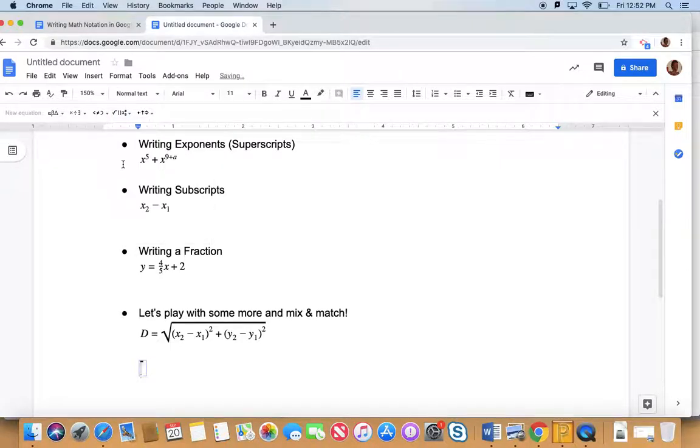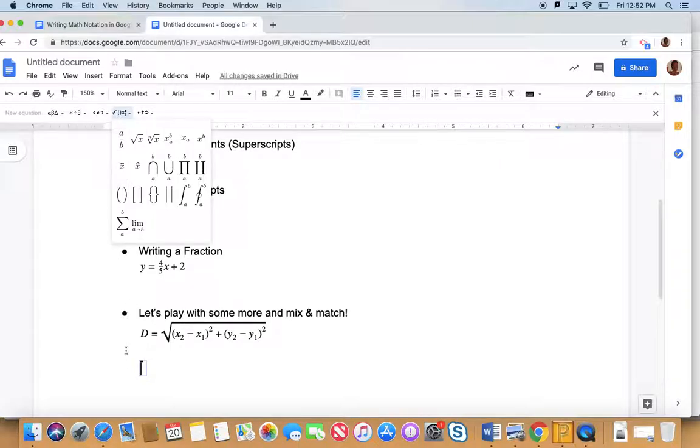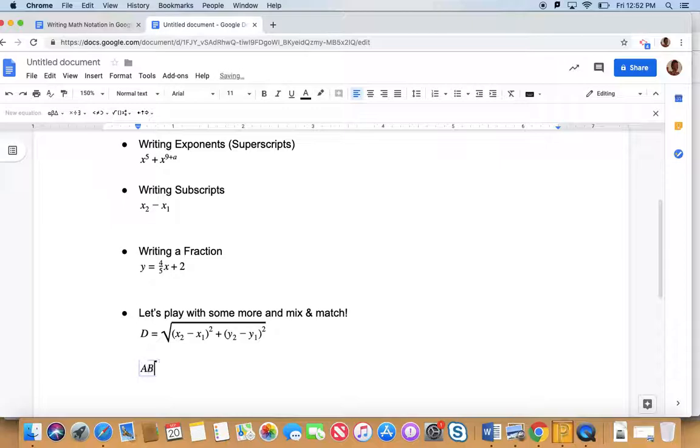If I want to write about a segment, I can click that. It was that one right there. And now I can have AB underneath. I just press the right arrow to get underneath. And now I'm out. And that's how you write segment AB.